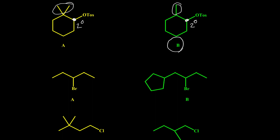For the next example, compound A and B both have secondary carbons at the leaving group, but compound B has a very bulky group that prevents the nucleophile from attacking the carbon easily, so the rate of reaction for A is faster.